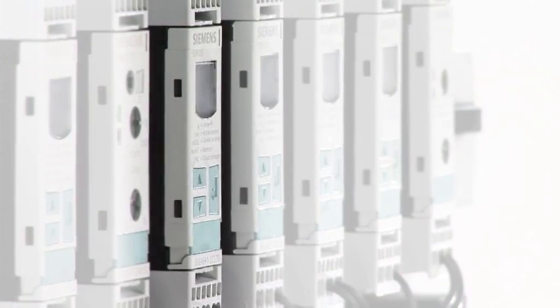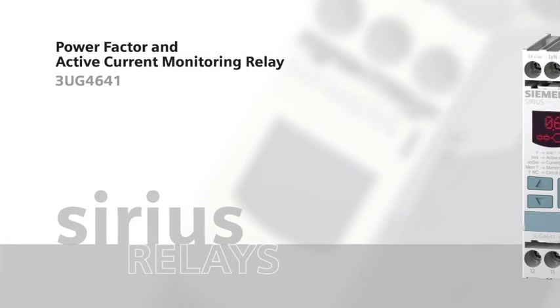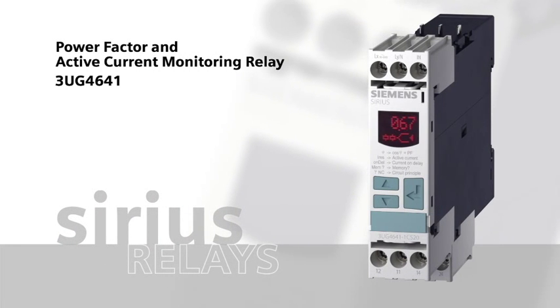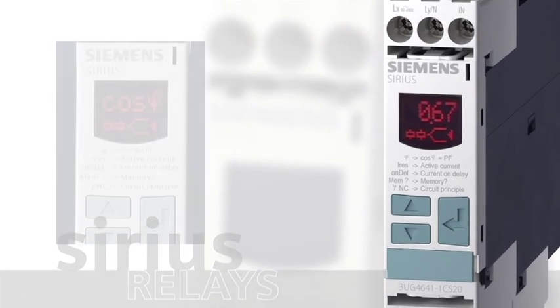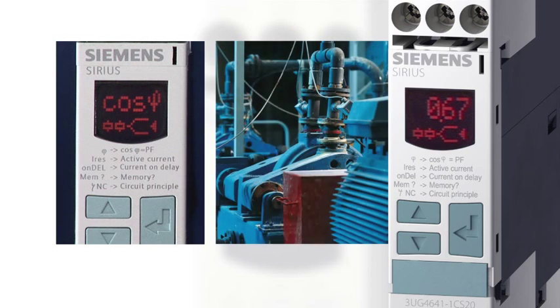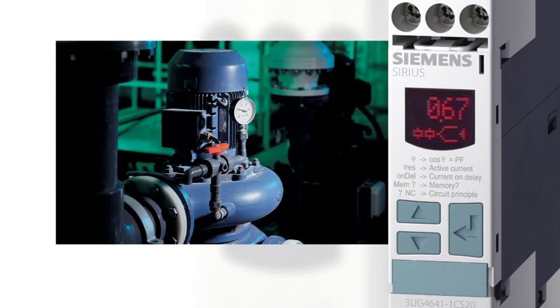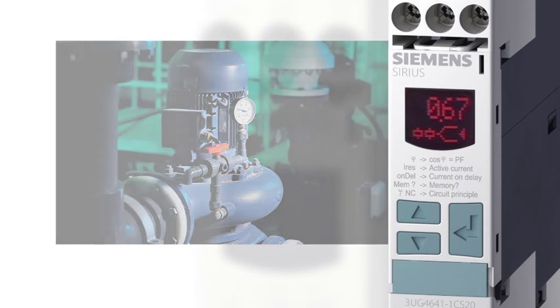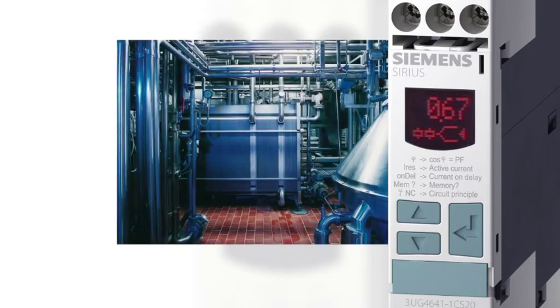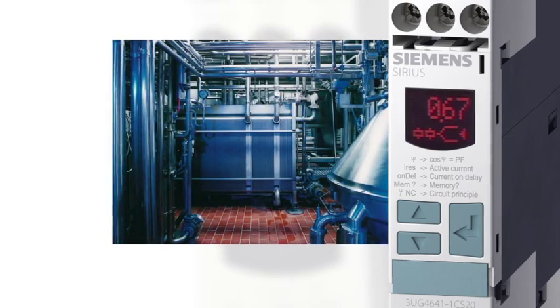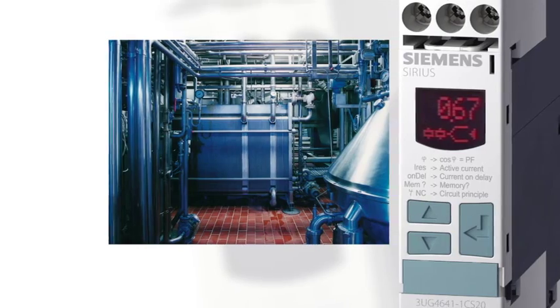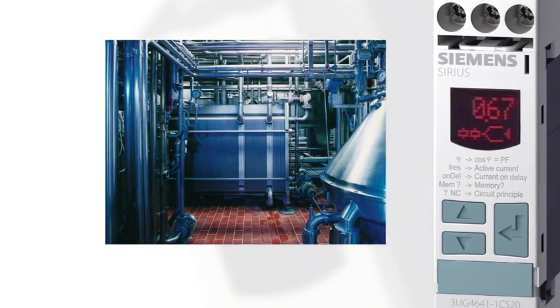The Sirius 3UG4641 Power Factor and Active Current Monitoring Relay monitors both the power factor and the active current for lower and upper limit settings. With the power factor, the motor can be monitored for low or zero load, as an example in case of V-belt slippage or pump idling. Furthermore, the active current monitoring allows for an early detection of motor overloads in addition to underloads, independent of the line voltage, as an example in case of bearing wear or filter blockage.